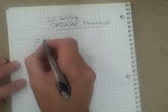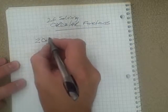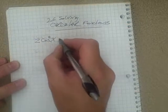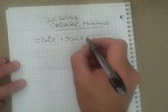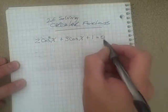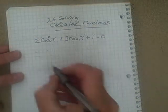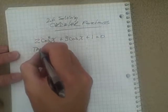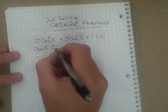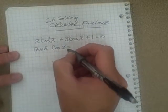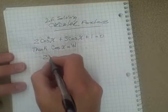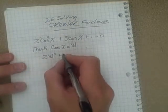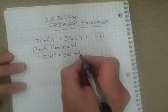Let's take a look at another example here. Let's say we have 2cos²x + 3cosx + 1 = 0. So this one, because it's got a squared, it's a factorable example. So think in terms of, say, cosx is equal to w. So this would look like 2w² + 3w + 1 = 0.